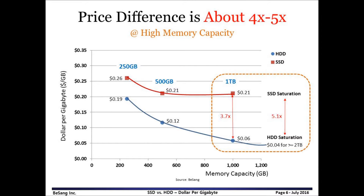At large capacity storage devices, 21 cents per gigabyte is lower than the TrendForce forecast of 24 cents, so NAND price drops much faster than expected. At 1 terabyte — the most popular memory capacity for desktop computers — the price difference is 3.75 times. For 2 terabyte and higher capacity, the difference becomes 5.1 times. For large capacity storage devices, HDD still keeps a much better price compared to SSD.